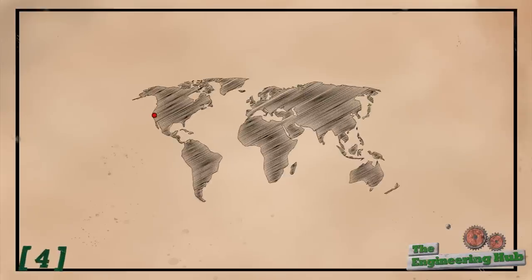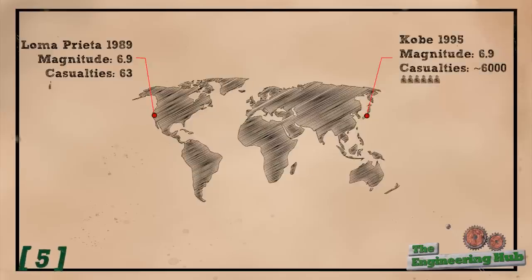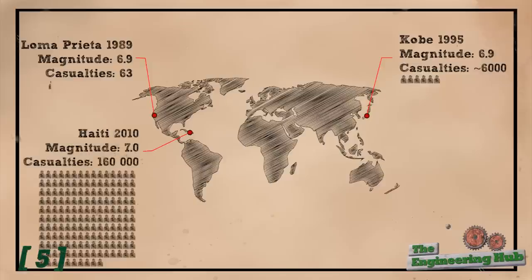For example, the Loma Prieta earthquake of 1989 with a magnitude of 6.9 resulted in 63 casualties. The 1995 earthquake in Kobe with the same magnitude of 6.9 killed around 6,000 people. In comparison, the 2010 Haiti earthquake measuring 7.0 resulted in more than 160,000 deaths. Clearly, well-engineered structures could and do make all the difference.